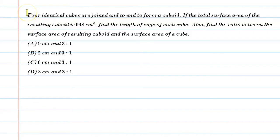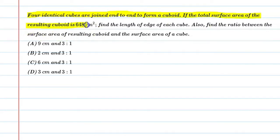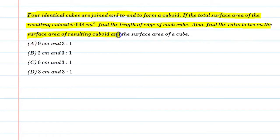Hello students, let's solve this question. Four identical cubes are joined end-to-end to form a cuboid. If the total surface area of the resulting cuboid is 648 cm², then find the length of edge of each cube. Also find the ratio between the surface area of the resulting cuboid and the surface area of a cube.